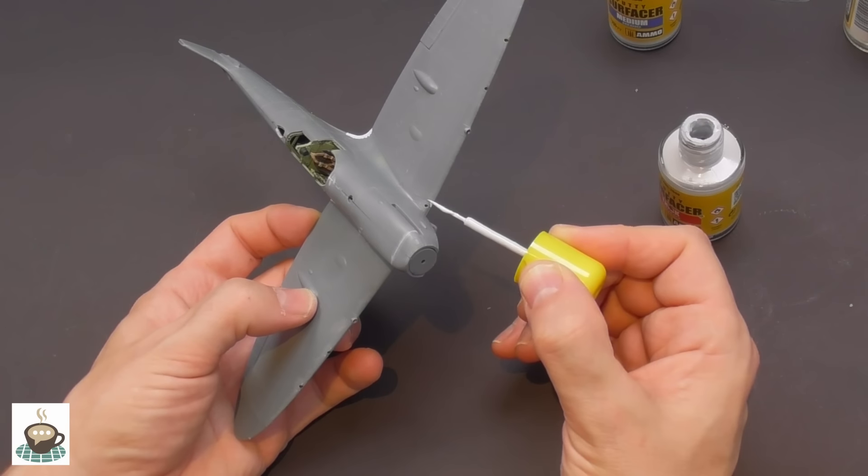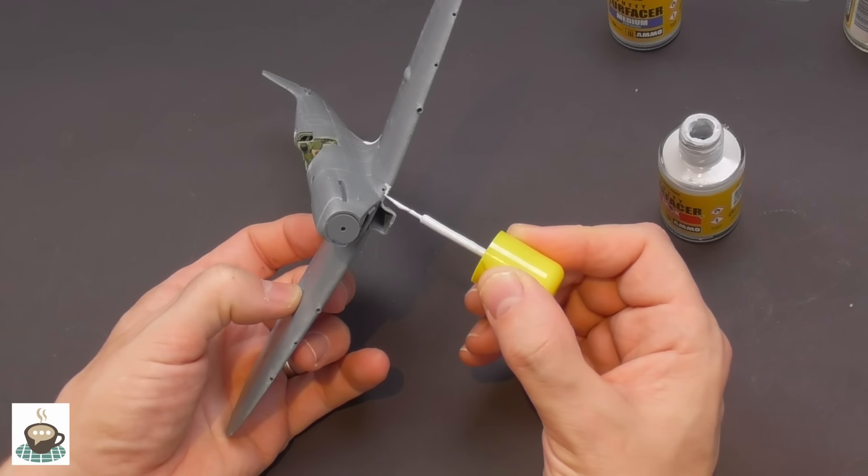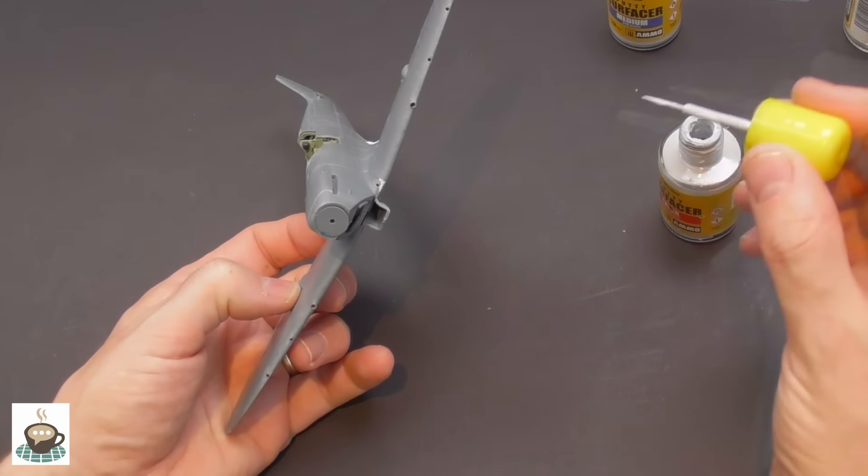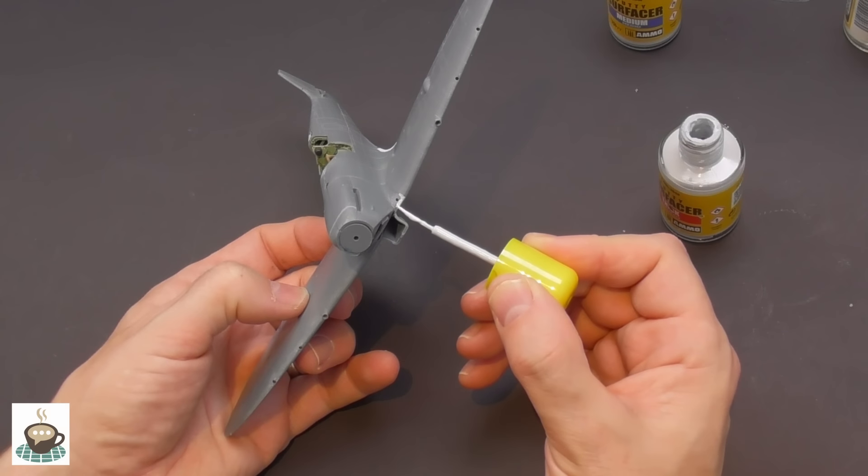Then while I have the surfacer, I just thought I'd do all the other seams. May as well, belt and braces. Probably didn't need it, but while I've got it there, I may as well.